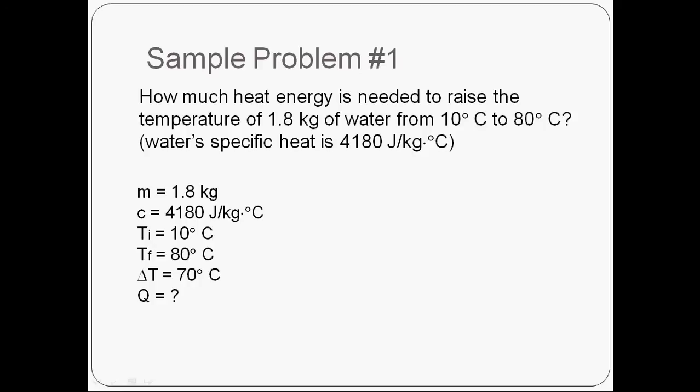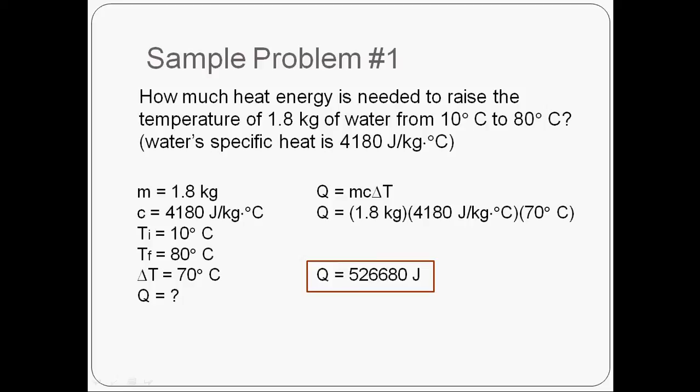So if I want to figure out how much the temperature changed, I just take the final temperature, which is 80 degrees, minus the initial temperature, which is 10 degrees, to get a total change of 70 degrees Celsius. I'm trying to solve for the heat energy, so that means Q is my unknown. The equation I have that relates these things is Q equals mc delta t. So at this point, I can just plug and chug. So I multiply the mass times the specific heat times that change in temperature, and I determine that it's going to take 526,680 joules of energy to raise the temperature of my 1.8 kilograms of water by 70 degrees.